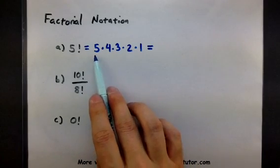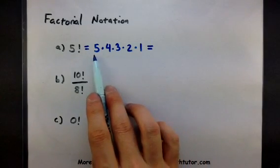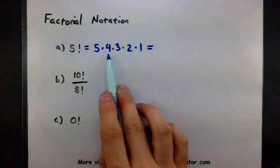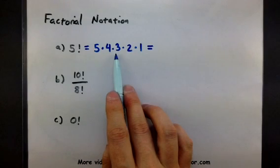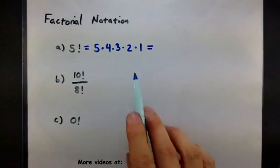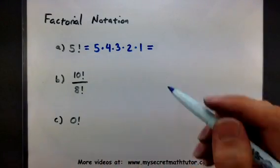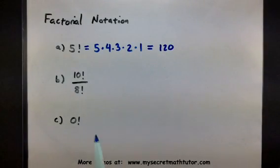To calculate it, you'd basically just run through these calculations. So 5 times 4 gives us 20, times 3 would be 60, and then times 2, 120, 120 times 1, 120. Perfect. So 5 factorial is 120.